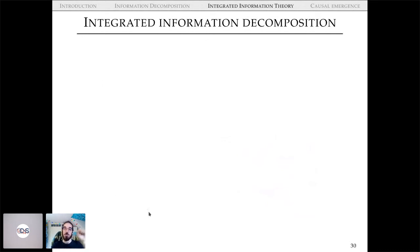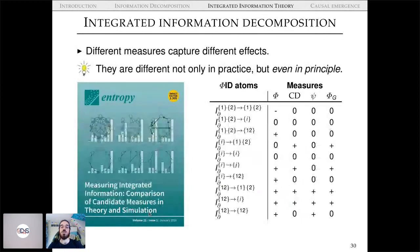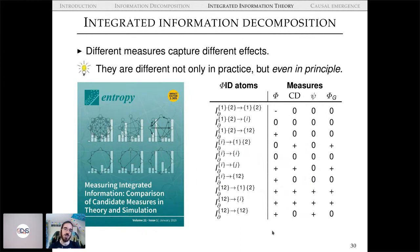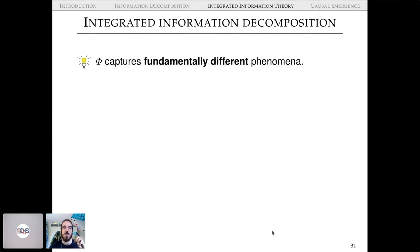When you decompose all these measures using Φ-ID, you find that different measures capture different effects — they're not just approximating the same thing differently, they're capturing different information-theoretic phenomena. We made a table with one row per Φ-ID atom and one column per measure, showing each measure captures a different set of atoms. This explains why they differ so often in systems of interest. This study was published in Entropy — if you're interested in IIT, please have a look.